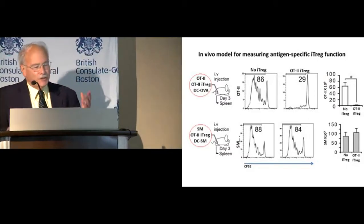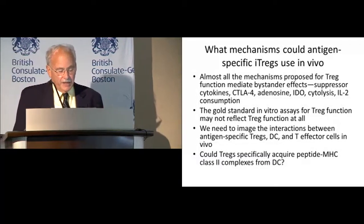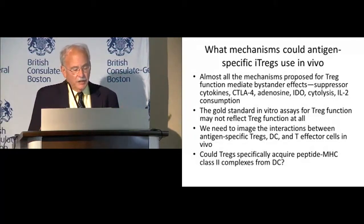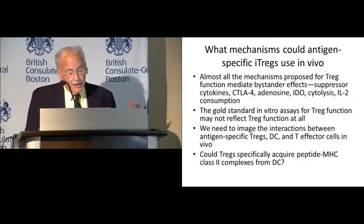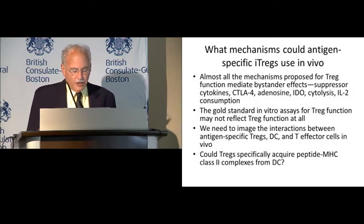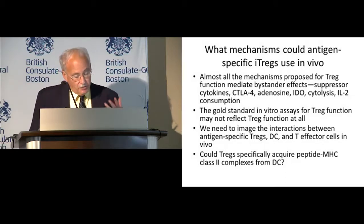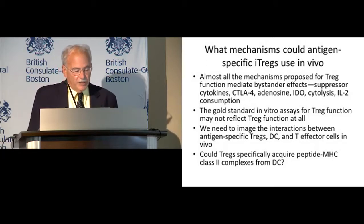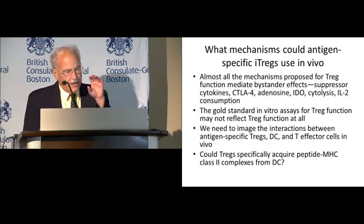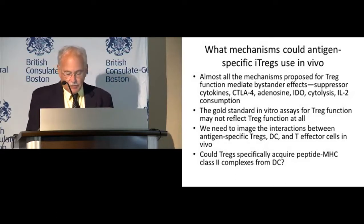This isn't the typical result. All the mechanisms of immune suppression I described — IL-10, adenosine, cytolysis — are bystander suppression effects in principle, and clinically that's what you want. In vitro we see bystander suppression, and in vitro assays of regulatory T cell function are very popular, but I'm not sure they measure real regulatory cell function. My own bias is that regulatory T cells work by specifically downregulating the antigen-presenting capability of dendritic cells, and how a regulatory cell specifically inhibits a dendritic cell's presentation of one peptide but not another remains a mystery.